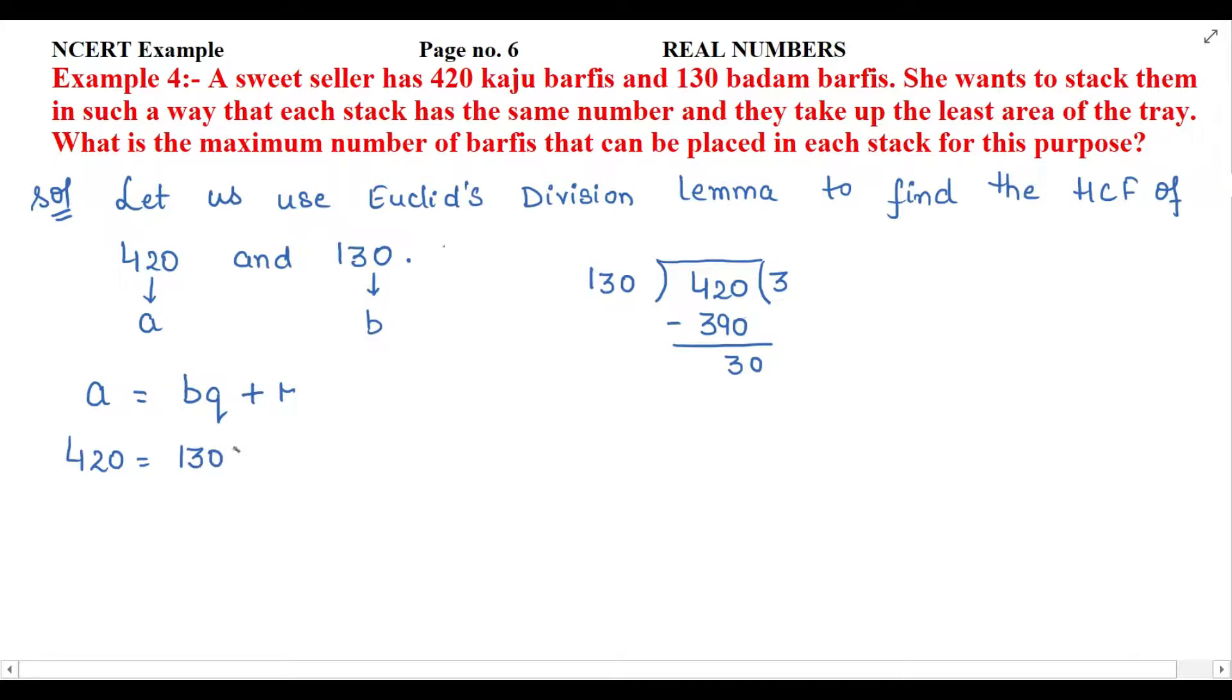That means 420 can be written as 130 × 3 + 30. Here the remainder is not zero, so the Euclid's division lemma process will continue. Now we will take 30 as a divisor and 130 as a dividend.